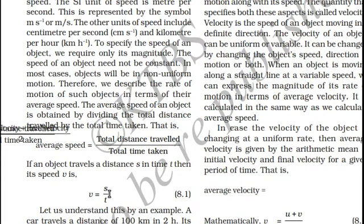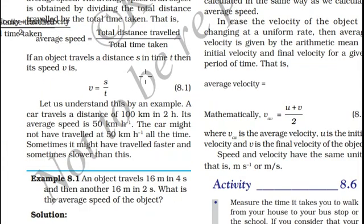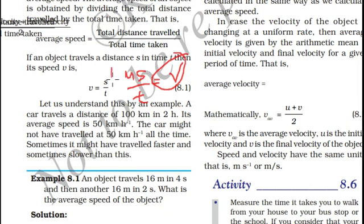We describe those different speeds in terms of average speed. The average speed of an object is obtained by dividing the total distance travelled by the total time taken. Denoting distance as s and time as t, average speed V equals total distance divided by total time, with units of meter per second.